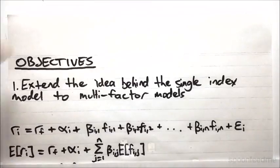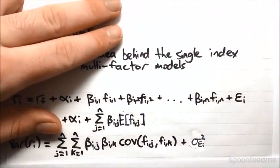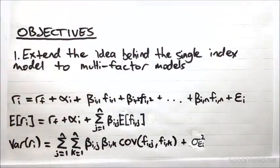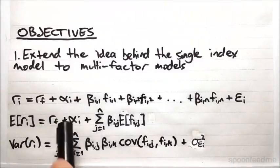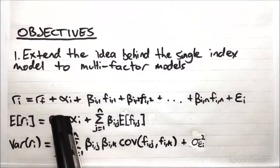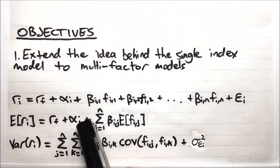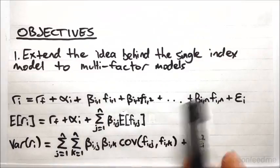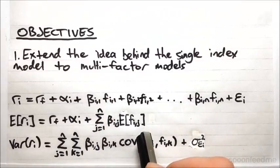Now, if we just have a look at the expected value and the variance of these, we can see, once again, very familiar results. We've got the risk-free rate, plus the alpha, plus now the sum of all the betas multiplied by the expected value of the factors.